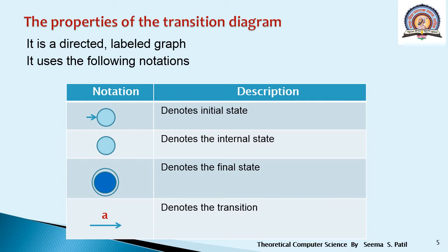The notations are as follows. An arrow with an empty circle denotes the initial state — this is the starting state, written as S. An empty circle alone denotes an internal state. A double circle denotes the final state.